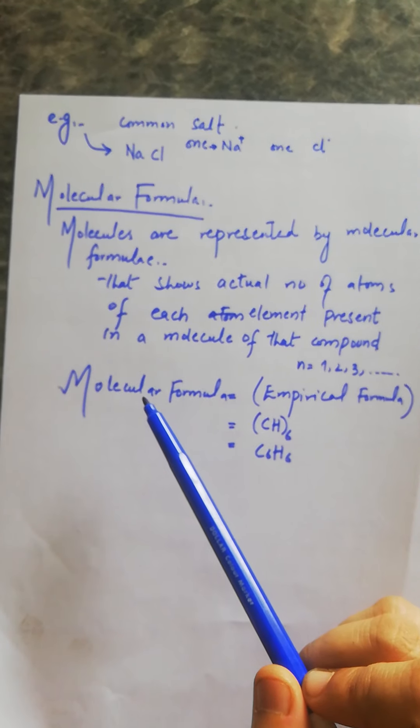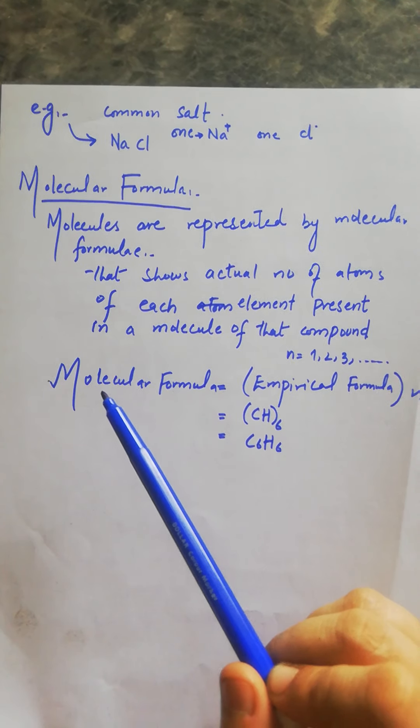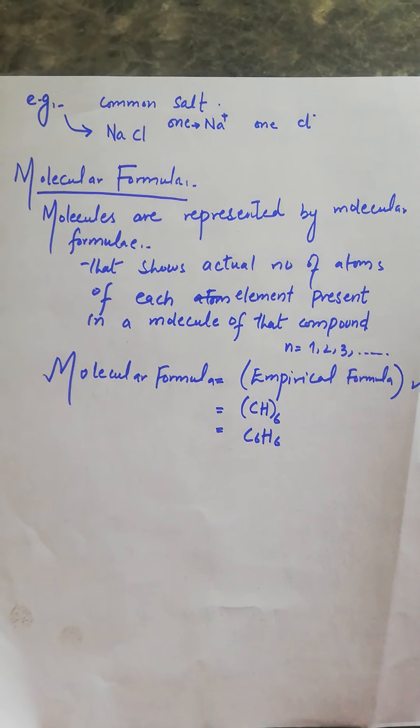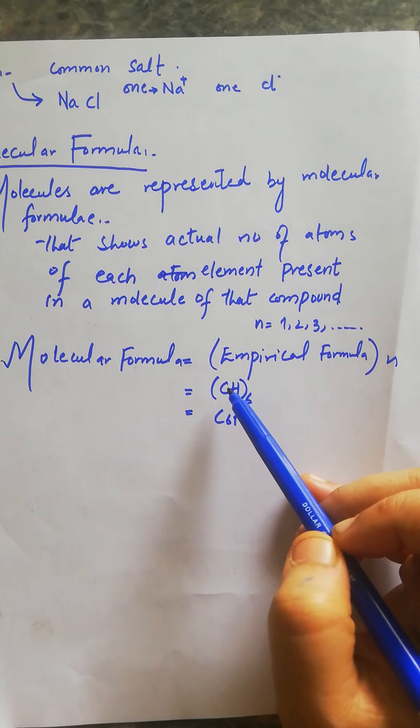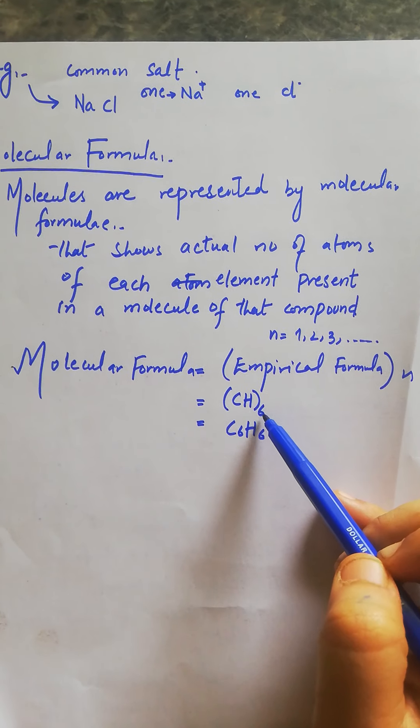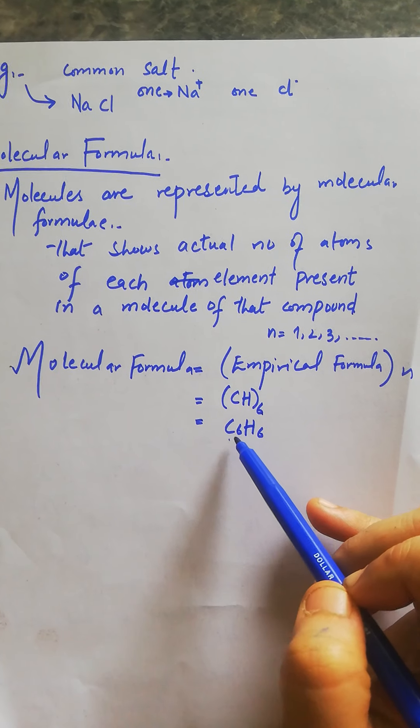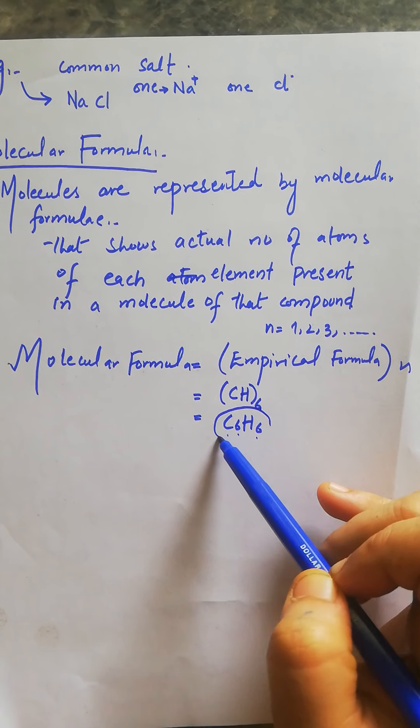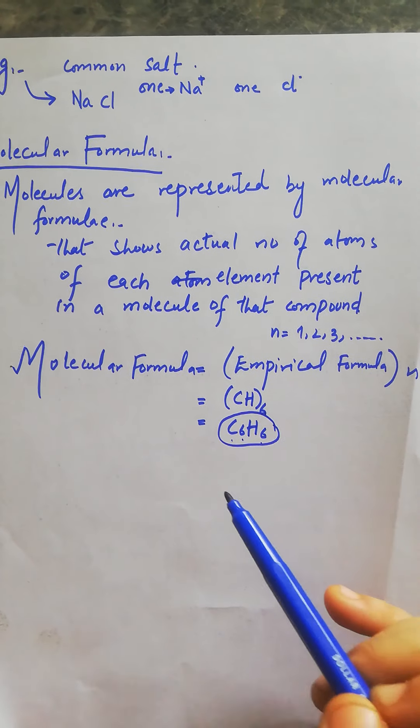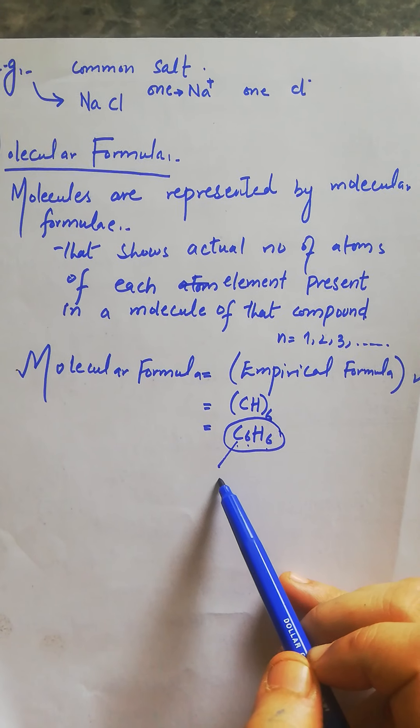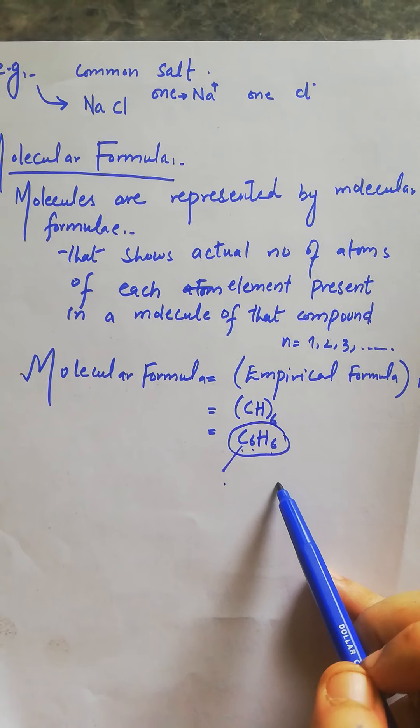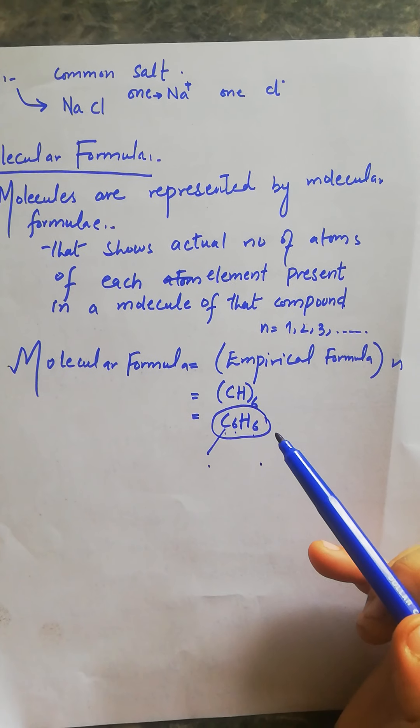For example, benzene's molecular formula: the simplest formula is CH, and if we multiply by 6, we get C6H6. This shows the actual number of atoms: six carbon atoms and six hydrogen atoms present in benzene.